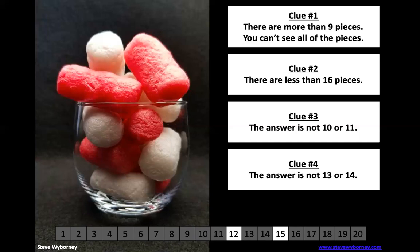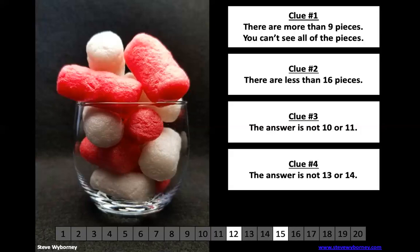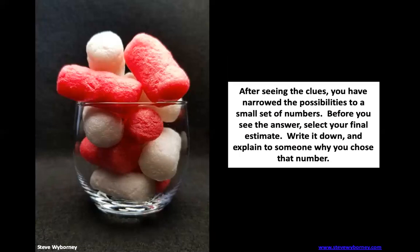So now I want you to think with all the information that we have, it's going to either be a 12 or a 15. Look at the glass and estimate what you think it's going to be. And I want you to write that number down, whether it's 12 or 15. And I want you to tell somebody what it is. And I want you to explain why you think it is. So if you think it's 12, why do you think it's 12? If you think it's 15, why do you think it's 15? So go ahead and take 15 seconds and tell somebody why you chose that number.